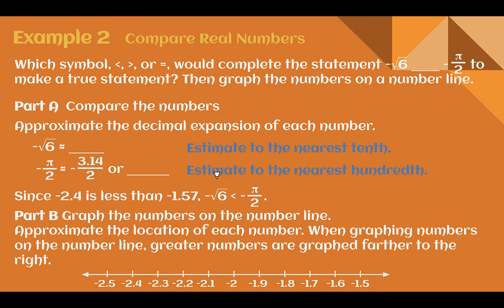Example 2: Compare real numbers. Which symbol — less than, greater than, or equal — would complete the statement: negative square root of 6, something, negative pi over 2, to make a true statement? Then graph the numbers on the number line. Part A: compare the numbers using decimal approximations. The square root of 6 is about 2.4, and since it was negative, that's negative 2.4. For negative pi over 2, we approximate pi as 3.14, divide by 2 to get 1.57, and it was negative — so negative 1.57.